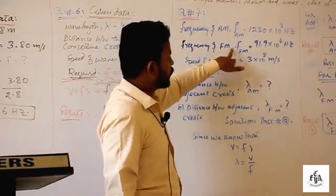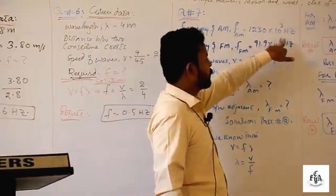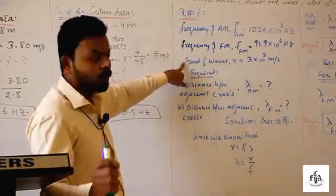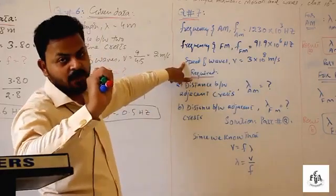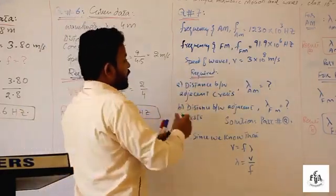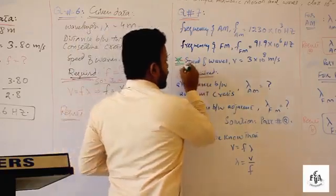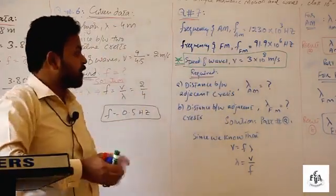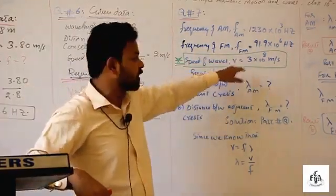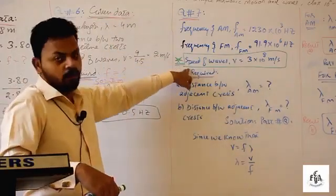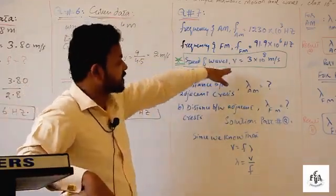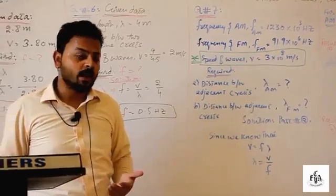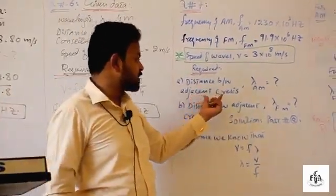FM frequency given is 91.9 × 10⁶ Hz. One important understood value you need to know — and which is not mentioned in the book — is that radio waves travel with the speed of light. You must memorize this, because without it you cannot solve the numerical. Speed v = 3 × 10⁸ meters per second. We are required to find λ for AM waves (part a) and λ for FM waves (part b).